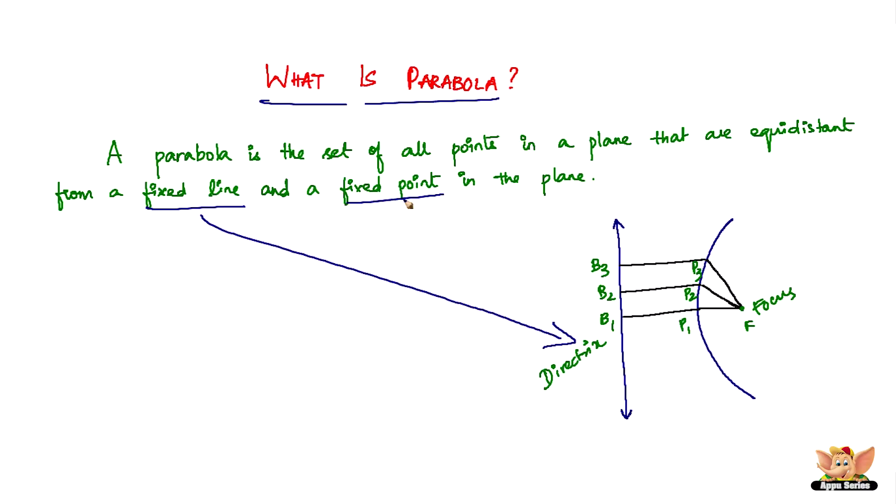the focus, and that's the fixed point they're talking about. So they're saying parabola is a set of all points - say this curve - it's a set of all points in a plane that are equidistant from a fixed line and a fixed point. So what it says is, now if you consider this point, say for example this particular point P3, now this point is equidistant from this fixed line and this fixed point, which means